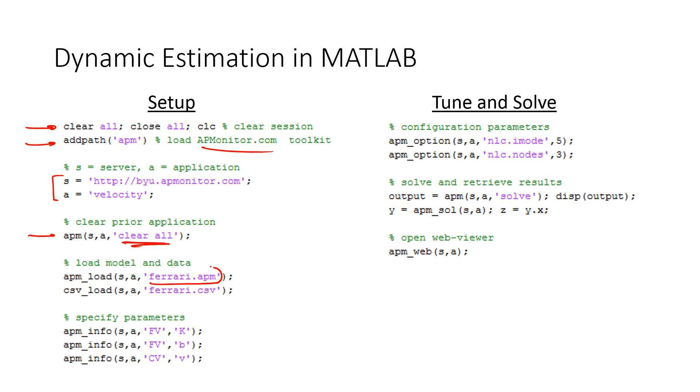And then I'll load in a model file, ferrari.apm and ferrari.csv. That's my data file. I'm going to specify that k and b, those are going to be the ones I'm going to try to estimate. And then I'm going to try to fit my velocity. I'm going to change this iMode value to 5. That is dynamic estimation.